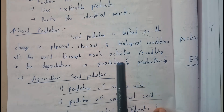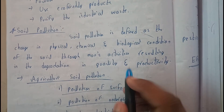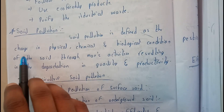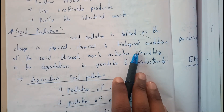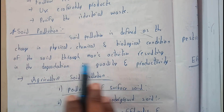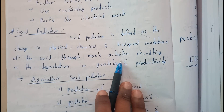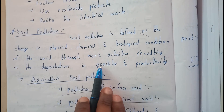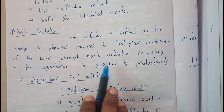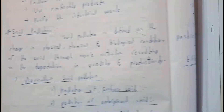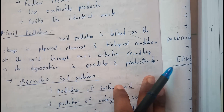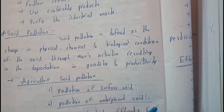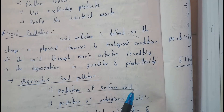Soil pollution is defined as the change in physical, chemical, and biological conditions of soil through man's activities, resulting in degradation of the quantity, quality, and productivity of soil. Basically, soil pollution is caused by many factors — there are not just one or two, there are many causes.